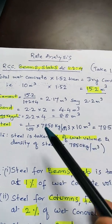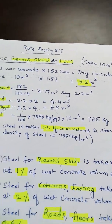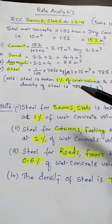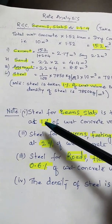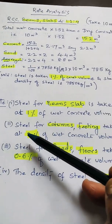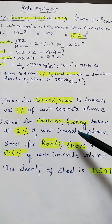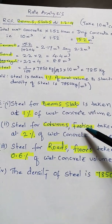This is how we calculate for different items. For beams and slabs, it is 1% of wet concrete volume. But for columns and footings, we have to take 2% of wet volume because steel required there is more.